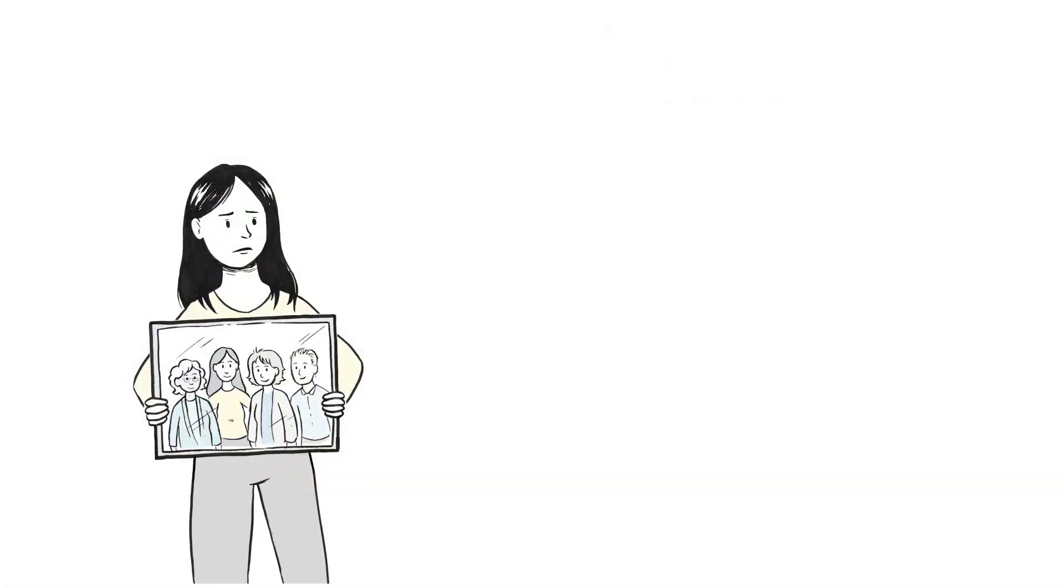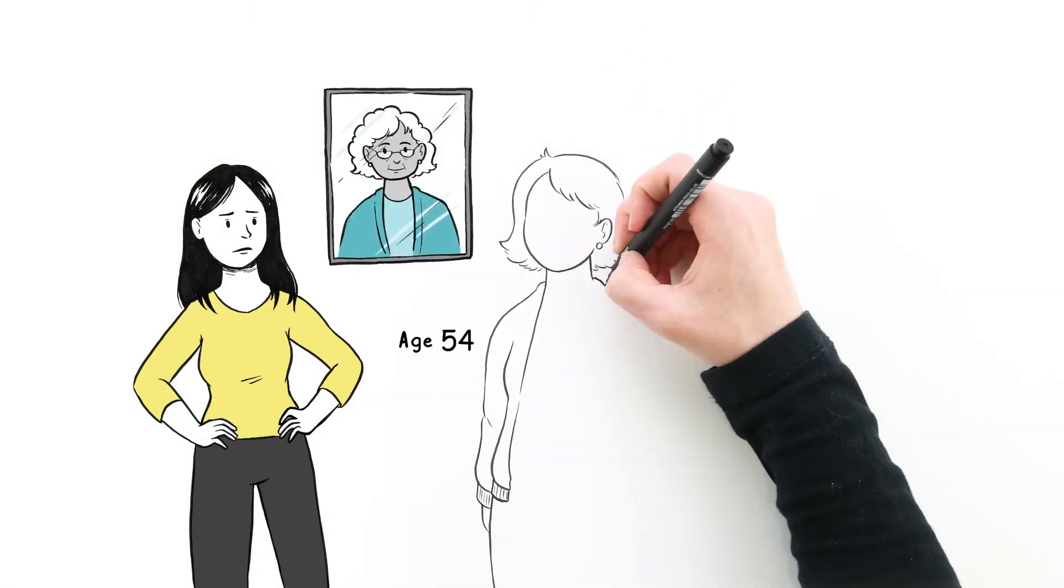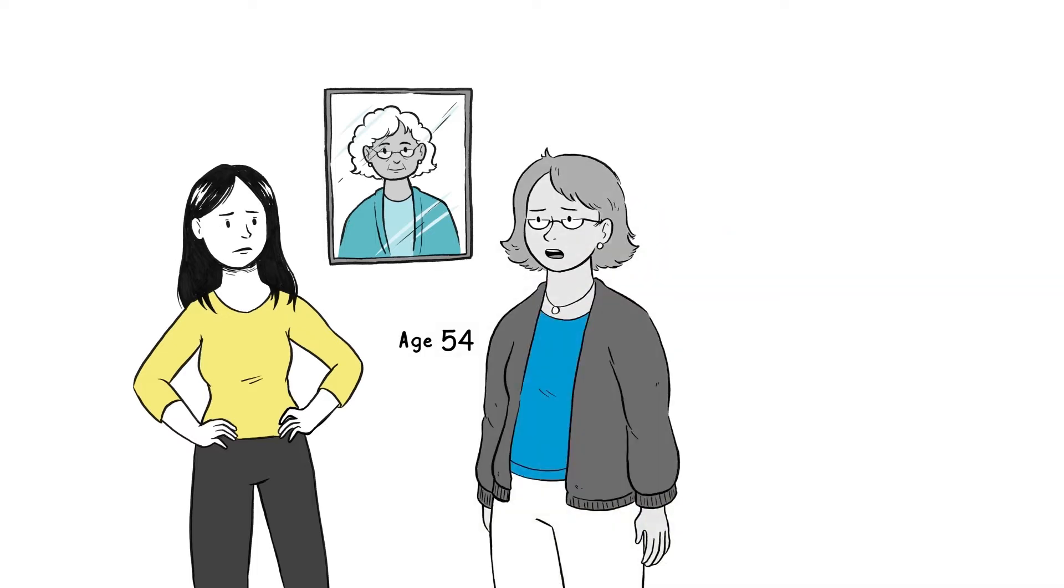Mia was convinced her family was cursed. Years ago, her grandmother died at an early age due to ALS symptoms. Then her aunt, at age 54, began developing behavioral and speech problems.